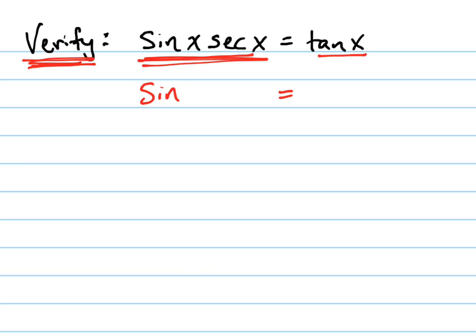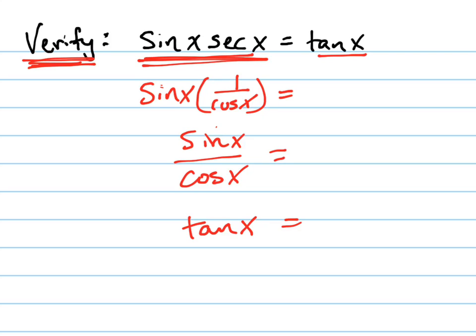So I'm going to change this into an equivalent expression. Secant is equal to one over cosine, so I'm going to write that. Sine times one over cosine is equal to sine over cosine, and sine over cosine is equal to tangent. So I've got from the left side, I've turned it into the right side.